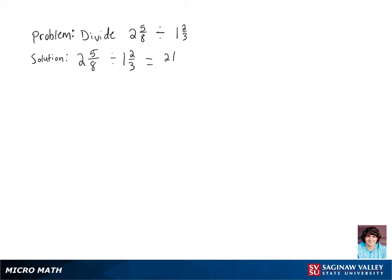So 2 and 5 eighths can be rewritten as 21 over 8, and 1 and 2 thirds can be rewritten as 5 thirds.